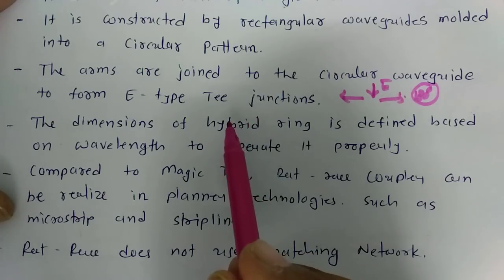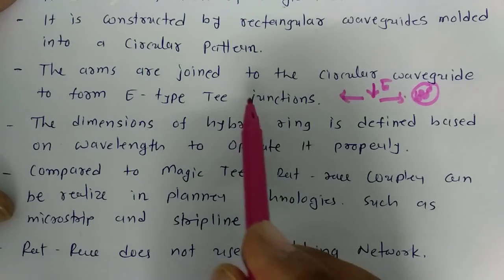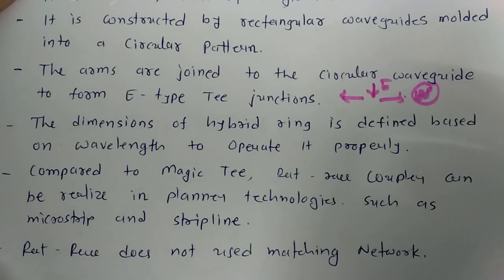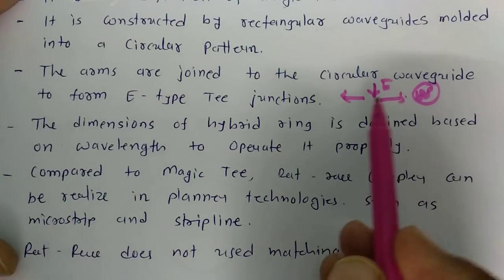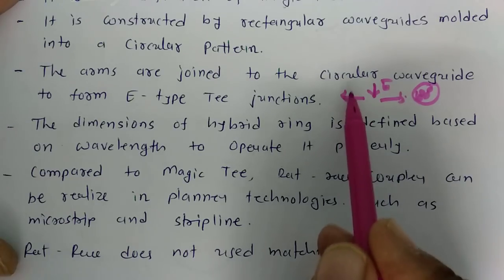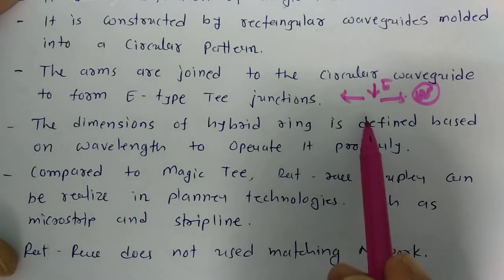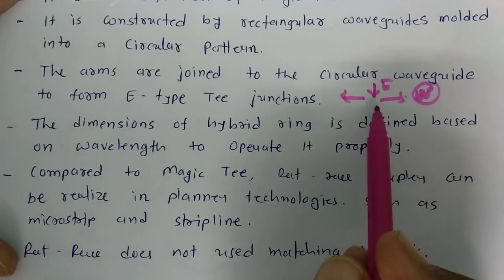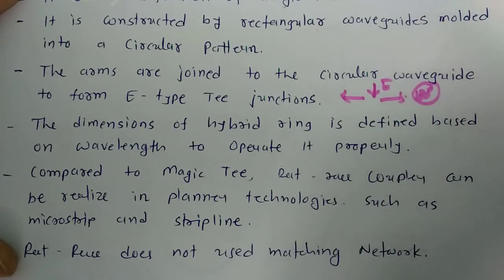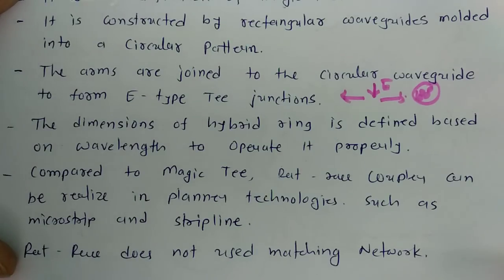Because of these E-plane junctions, the hybrid ring operates in two modes: even mode and odd mode. In even mode, we use a signal which is in phase with the input signal, and in odd mode we use a signal which is 180 degrees phase-shifted relative to the input.